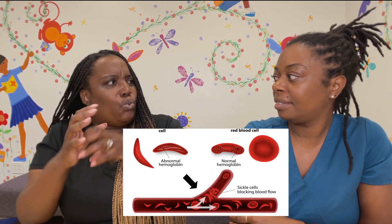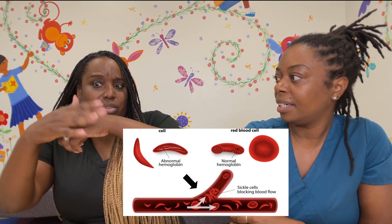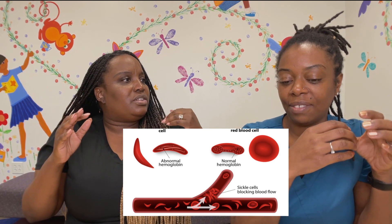Because those cells are C-shaped, sometimes they get stuck in places and can't move like regular round red blood cells. They even get stuck on themselves. Also, those red blood cells die earlier — they don't live as long as a normal red blood cell. So they can't carry as much oxygen to other parts of your body, which causes the complications with sickle cell disease.